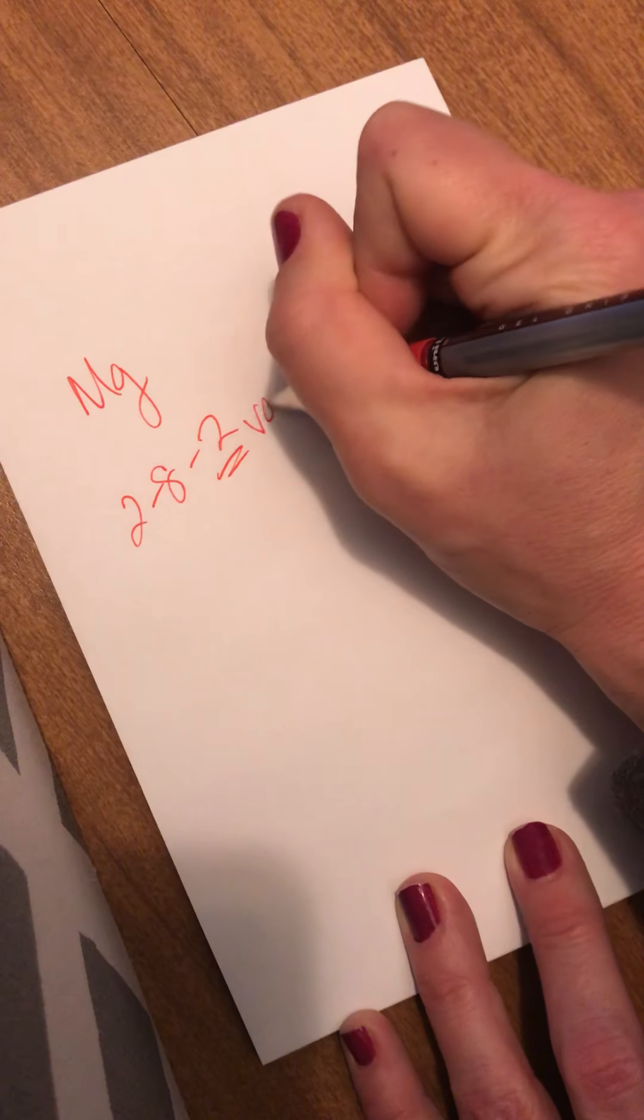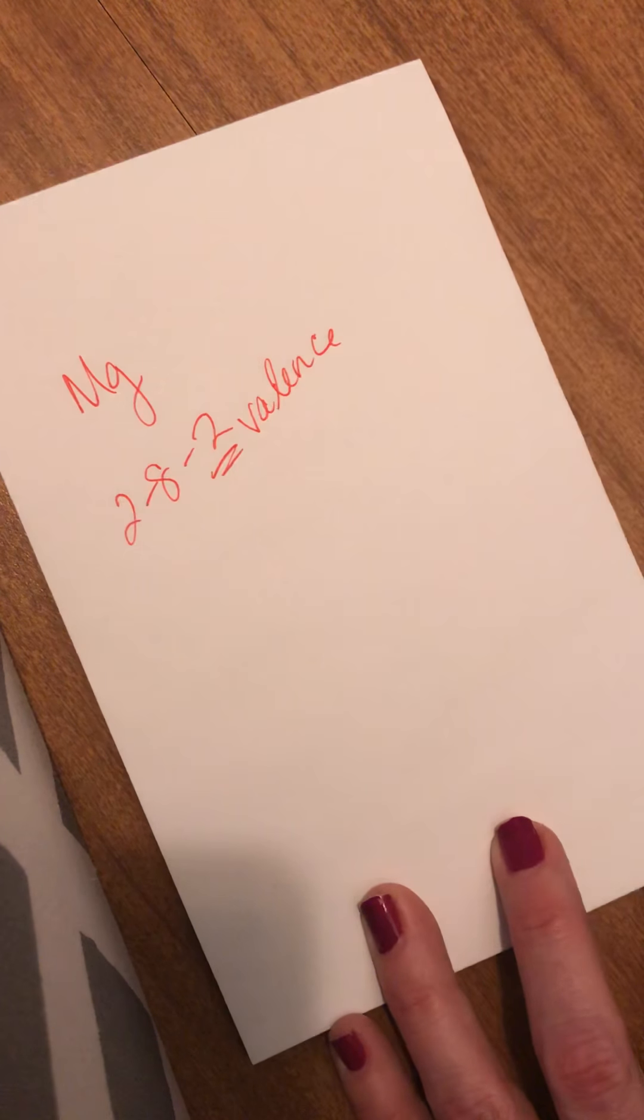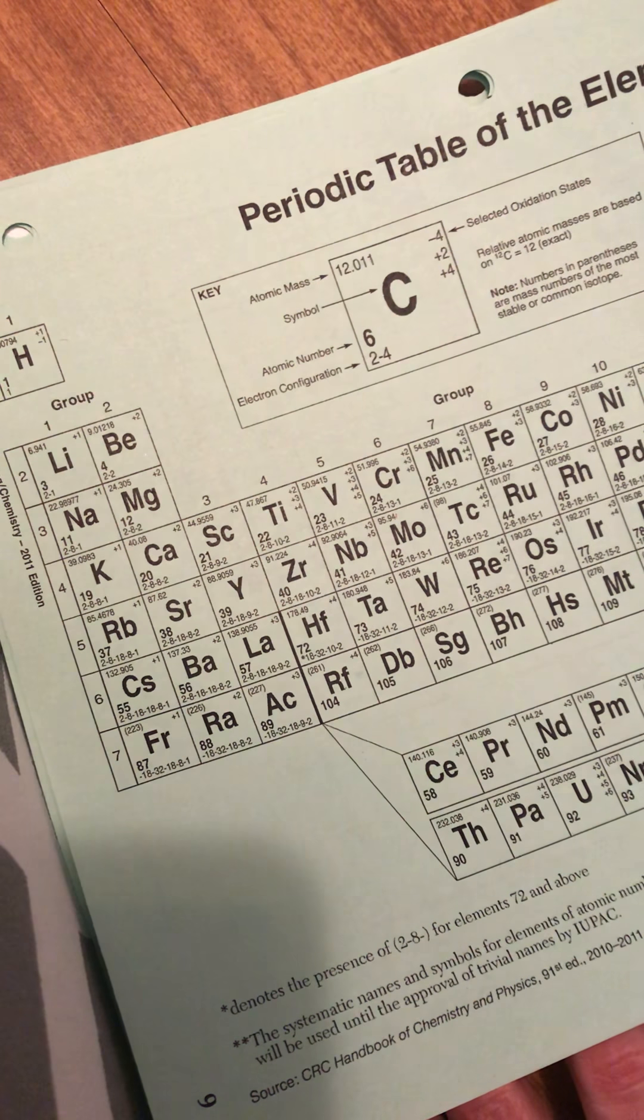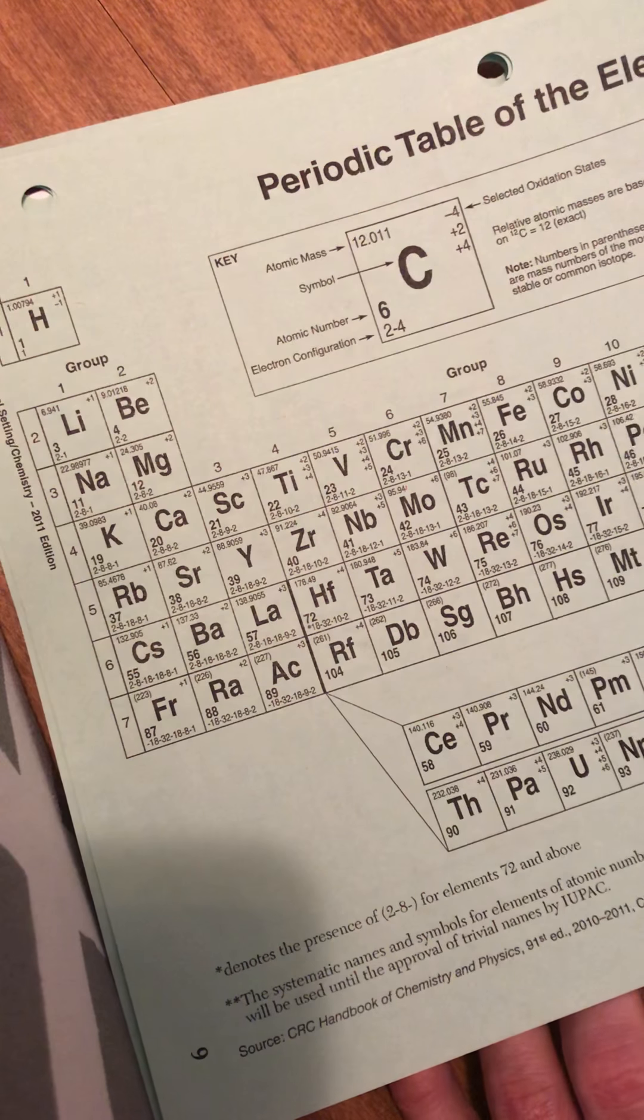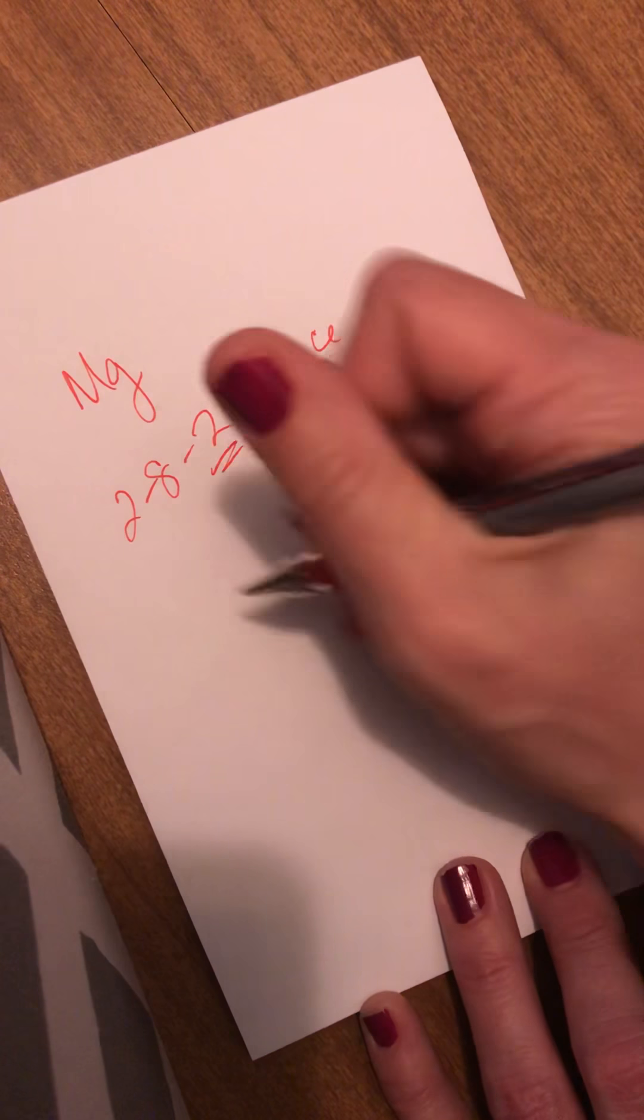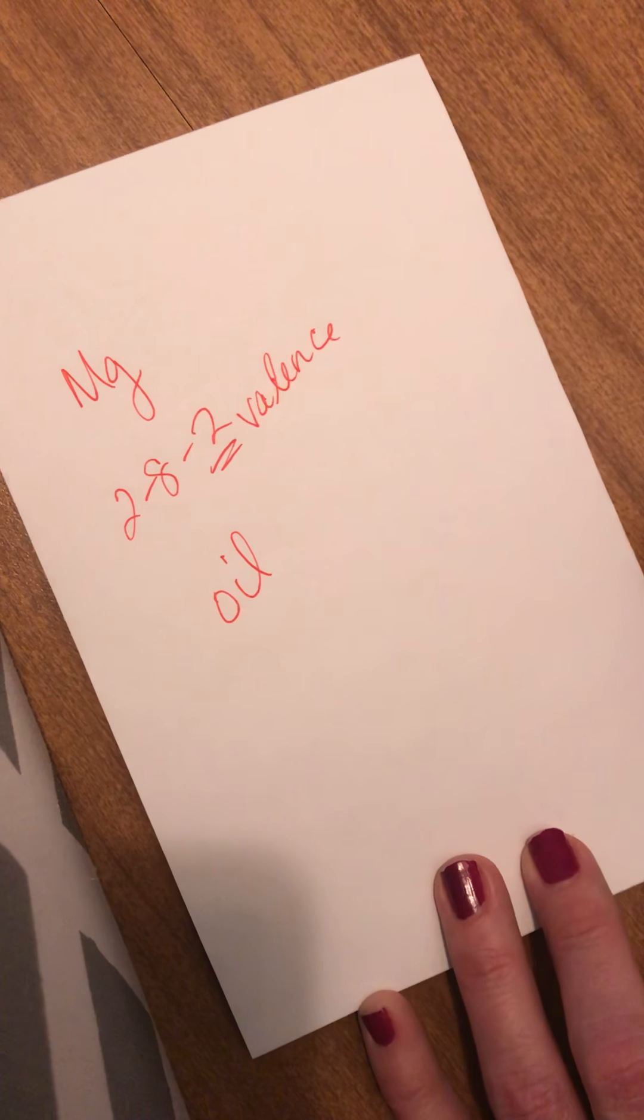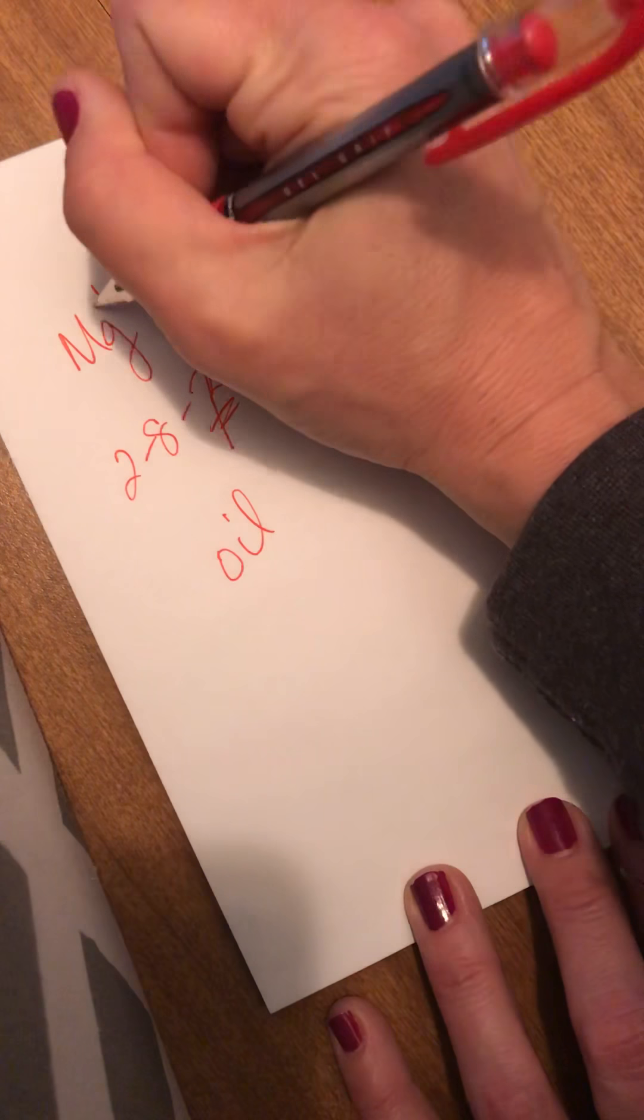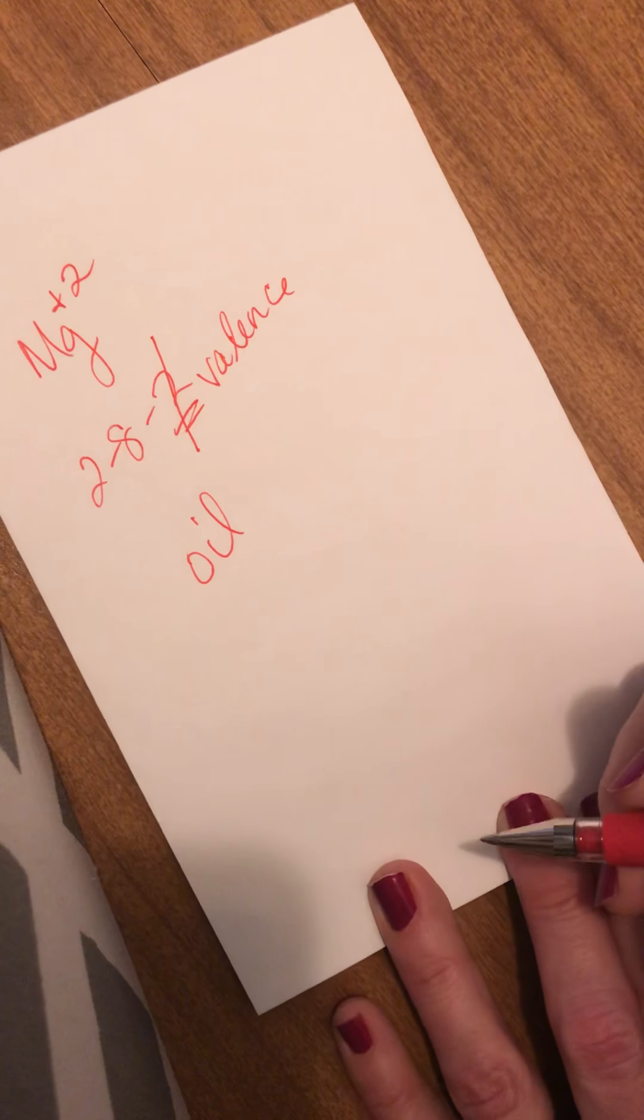And it's a left side loser. It's on the left side of the periodic table, which means that it's a metal, which means it's most likely to oxidize. And oxidizing is losing electrons. So if it lost those 2 valence, it would become Mg plus 2.